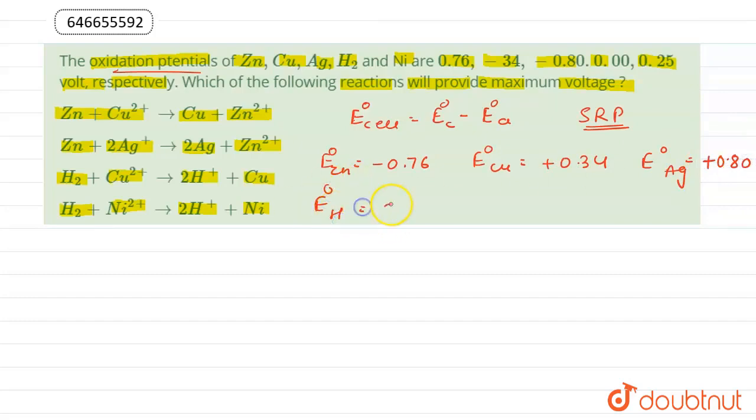it becomes zero. For nickel it is -0.25 volts. These are the standard reduction potentials for the given substances. Now we calculate E°cell for each option.